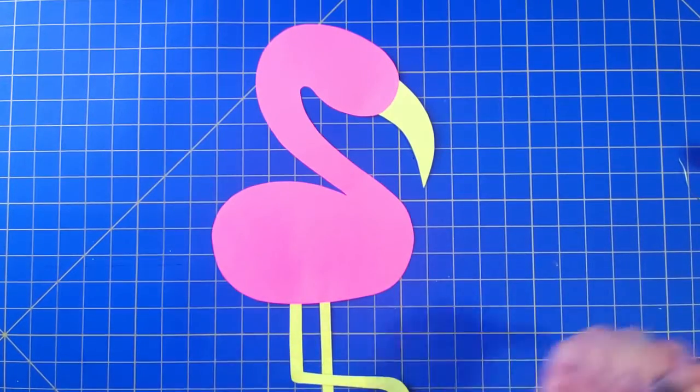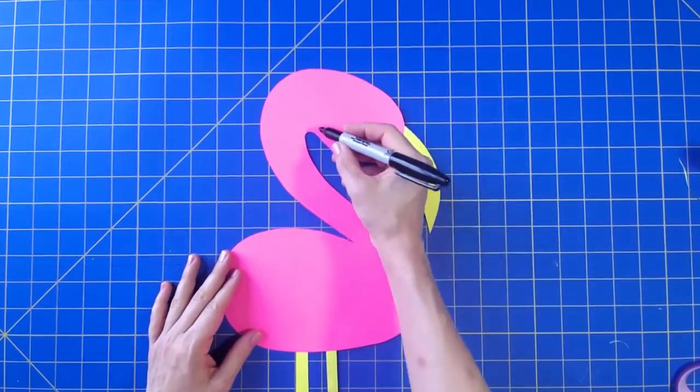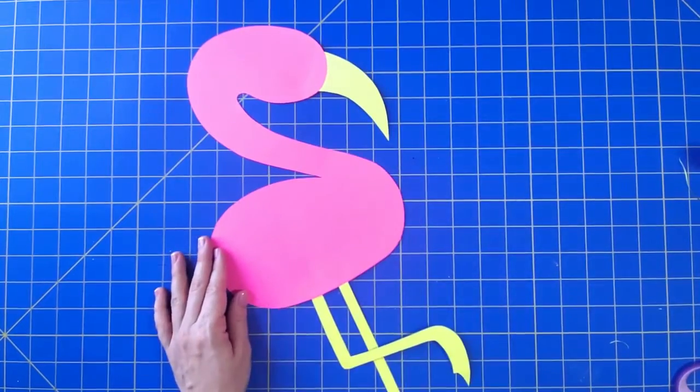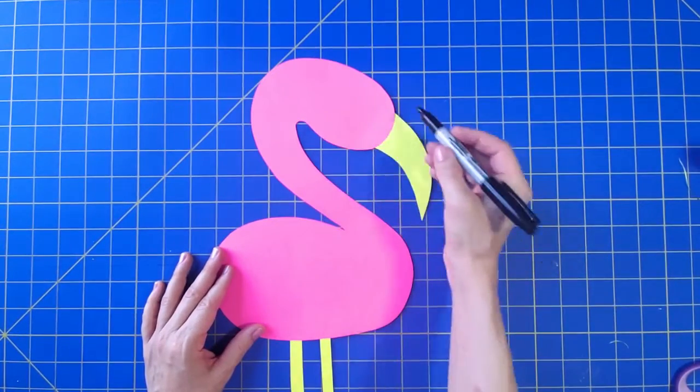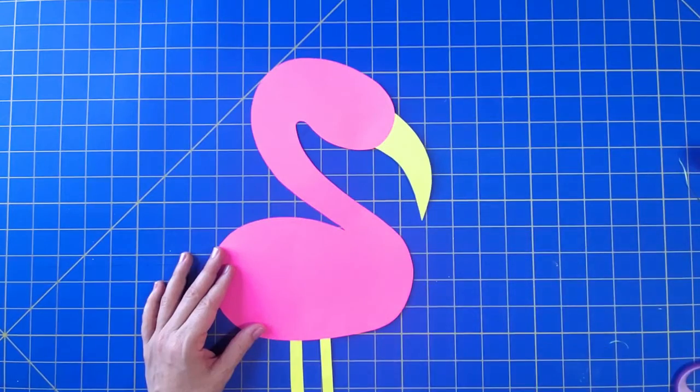When everything is glued, I'm going to do the details. I like the way the black outline looks, so I'm going to go ahead and give this whole thing an outline, and then I'm going to add some details like an eye and the black parts on the flamingo's beak.